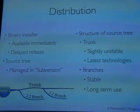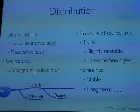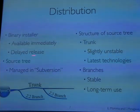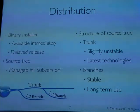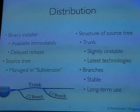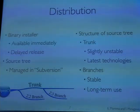The next point to discuss is the distribution of OpenCV. The distribution method has a binary installer and a source tree managed in a version control server. The advantage of a binary installer is that it is available immediately; however, bugs can only be fixed in the source tree. This figure shows the structure of the source tree. The trunk is slightly unstable because the latest technologies are always implemented there first. Branches are stable, keeping each version's specs. If you would like to use OpenCV long term, I recommend using the branches.